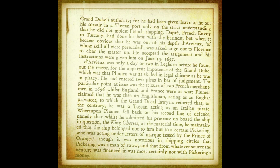D'Arvieux was only a day or two in Leghorn before he found out the reason for the apparent impotence of the Grand Duke: Plumen was as skilled in legal chicane as he was in piracy. He had entered two pleas in bar of judgment. The particular point at issue was the seizure of two French merchantmen in 1696 whilst England and France were at war. Plumen claimed he was then an Englishman acting as an English privateer. The Grand Duke's lawyers retorted he was a Tuscan acting as an Italian pirate. Plumen fell back on a second line of defense: that whilst he admitted his presence on board the ship, the King Charles, he maintained the ship belonged not to him but to a certain Pickering, who was acting under letters of mark issued by the Prince of Orange — though it was notorious that Pickering was a man of straw.